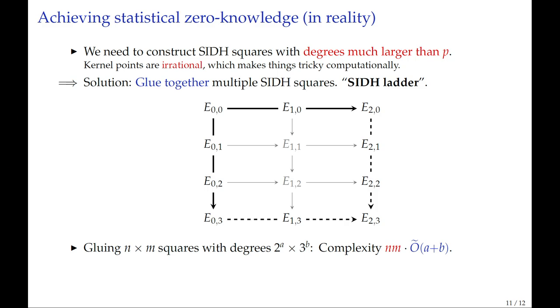Computationally, this is much more expensive than the previous one. While computing isogenies is log-linear in their degree, the computation of an SIDH ladder is quadratic in the number of SIDH squares that make up the ladder. But the interesting thing is that we don't just achieve statistical zero-knowledge with this approach, but we're also able for the first time to prove knowledge of an isogeny, regardless of its degree or its base field. Before we had several constraints, but now we can prove knowledge of any isogeny in any base field.